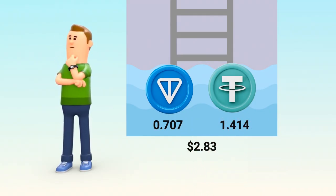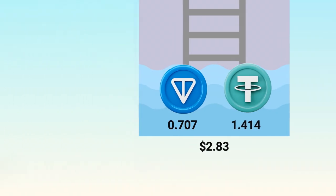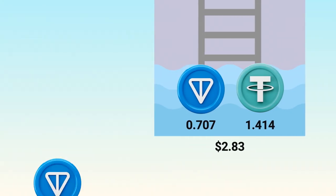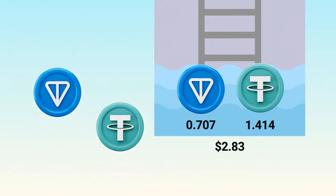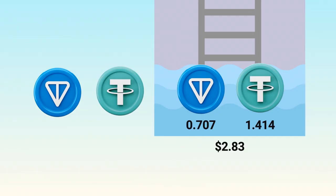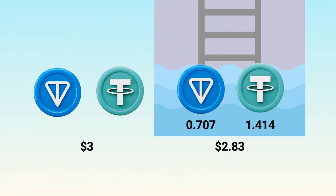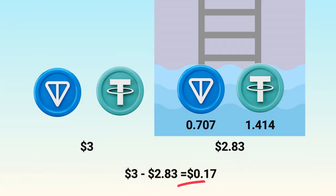That's a total value of about two dollars and 83 cents when you withdraw. If instead you had simply held one TON and one USDT outside the pool, their combined value would be three dollars. The difference — roughly 17 cents, or about 5.7 percent — is the impermanent loss in this case.